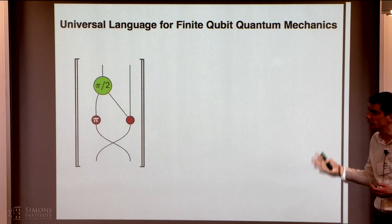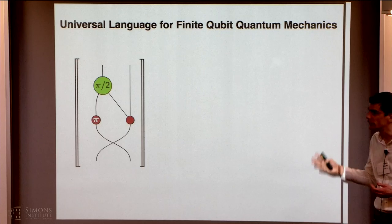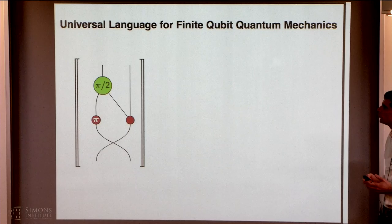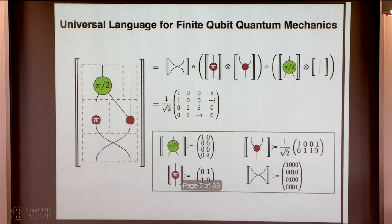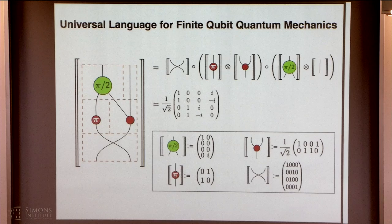If you want to know what quantum evolution is represented by a diagram, you can compute the semantics — that is, a matrix describing the quantum evolution. In order to know what the matrix is, you cut your diagram into pieces, decompose it, look at the semantics of the language for each basic element, and compute the matrix associated with the diagram.